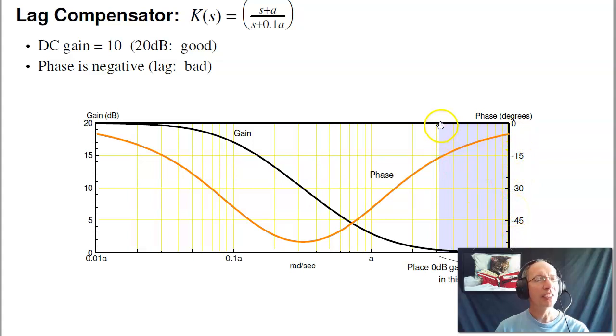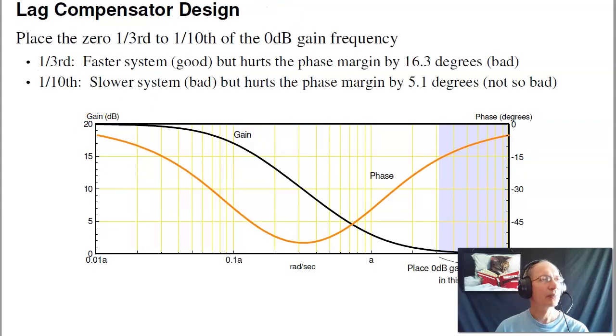And what that does then is that hurts the phase margin by, I think, 15 degrees or five degrees. So essentially what you have to do is you have to design for an extra 15 or five degrees phase margin. Add the lag compensator, that gets your phase margin back, and you've increased the DC gain.